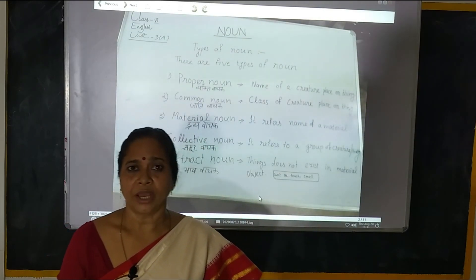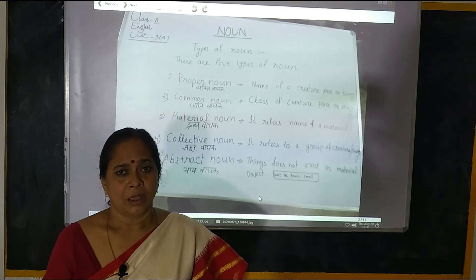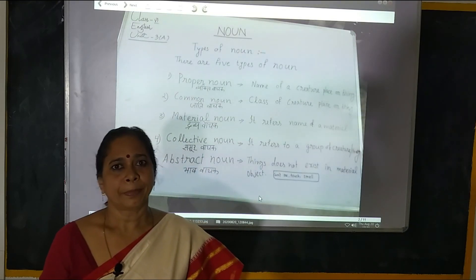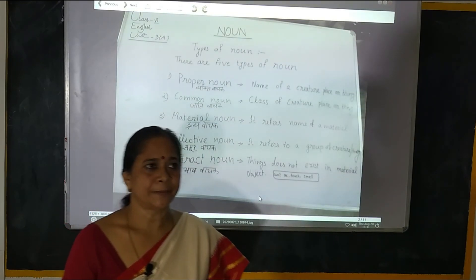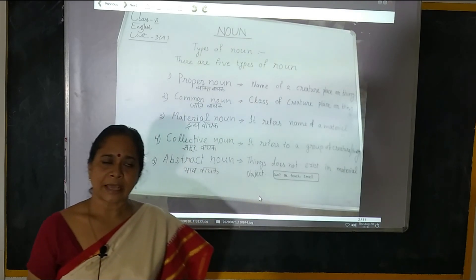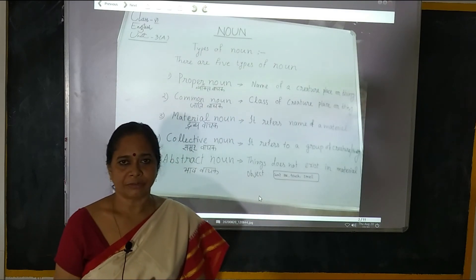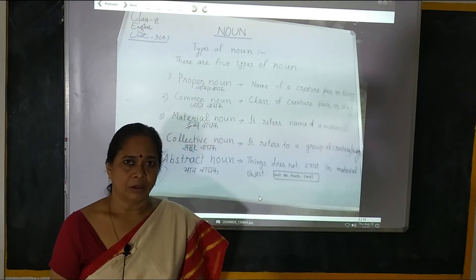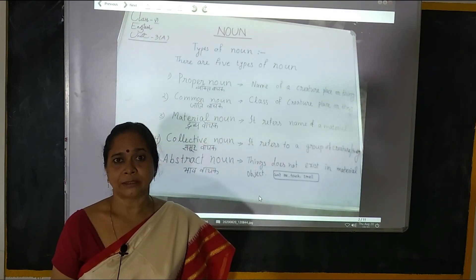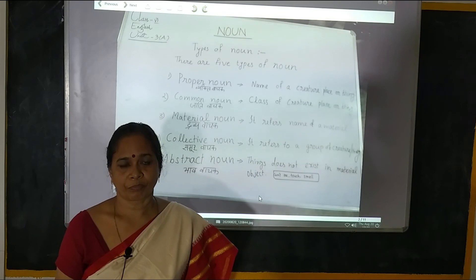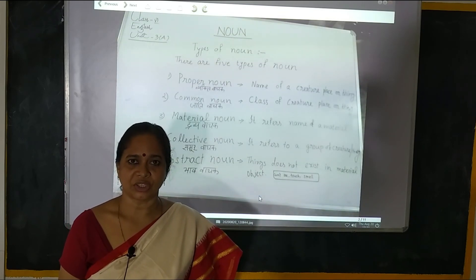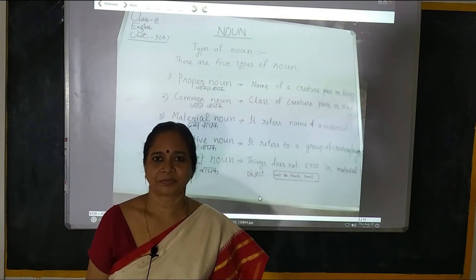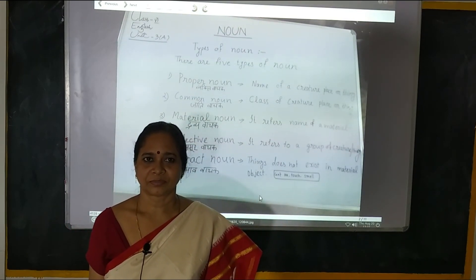Jaise bhav — bhav vachat sanjya mein include hai: Honesty, Loneliness, Happiness, Love, Care, Concern. Yeh sari chijay hain jo hum mehsoos kar sakte hain. Thank you.